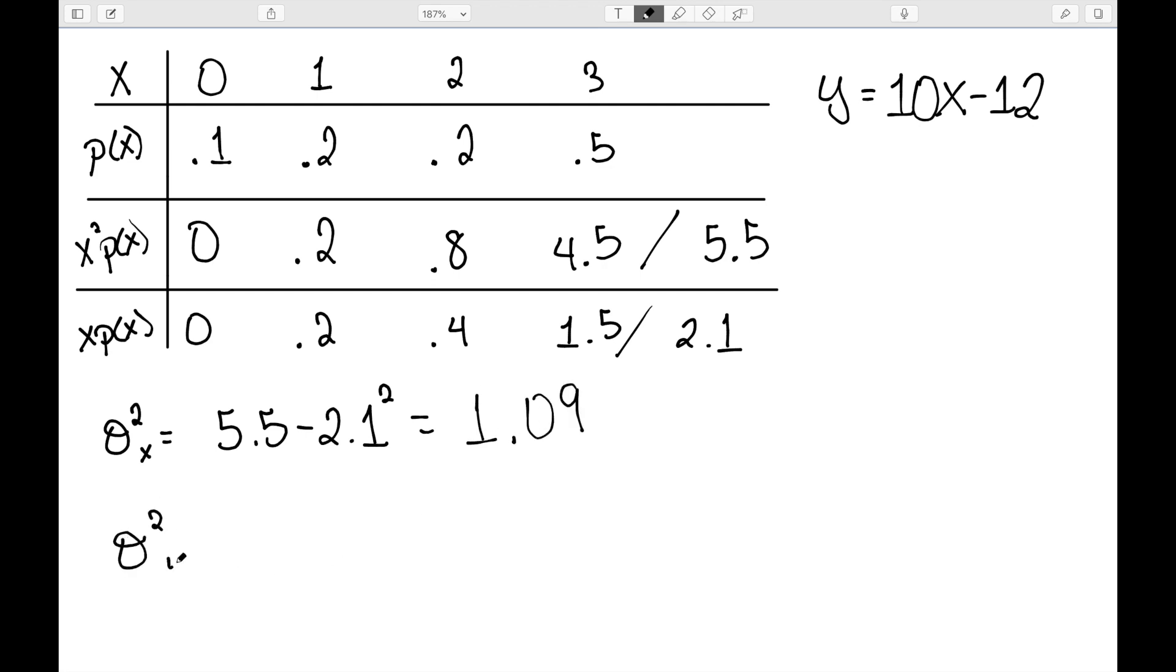So my variance for y is given by b squared times the variance of x. So b is going to be equal to 10, it's the number in front of x. So we have 10 squared times 1.09, or 109.